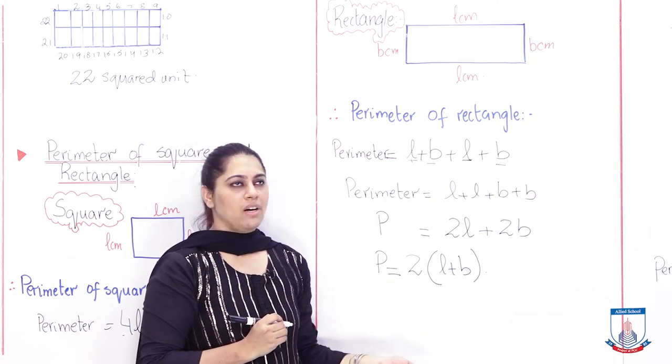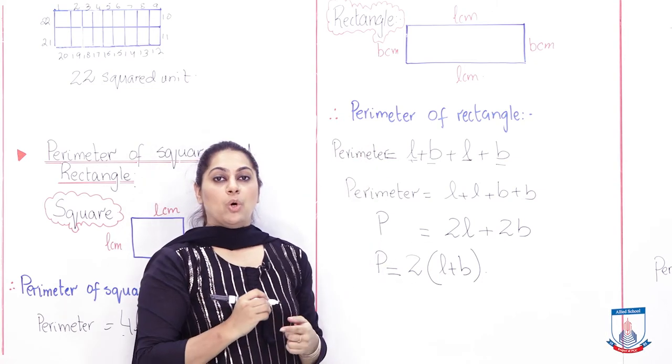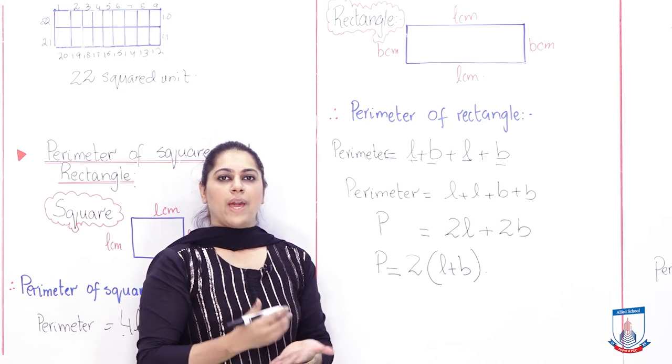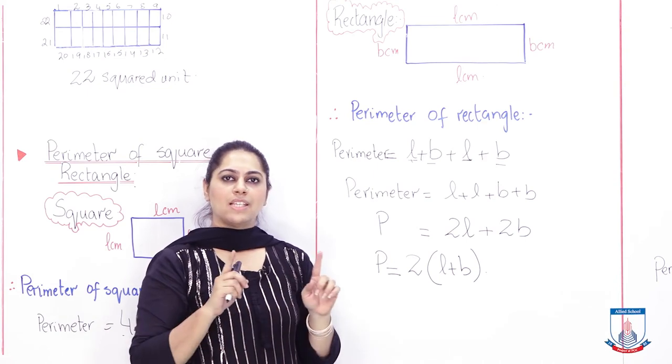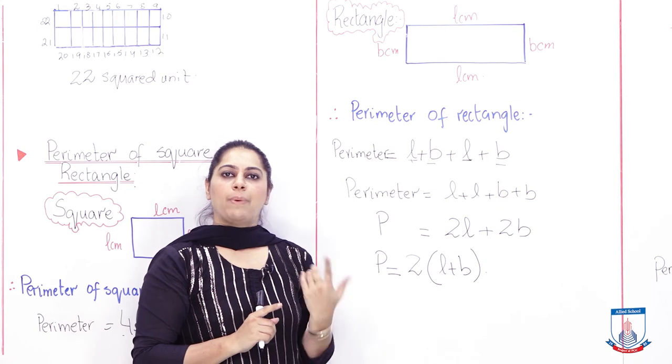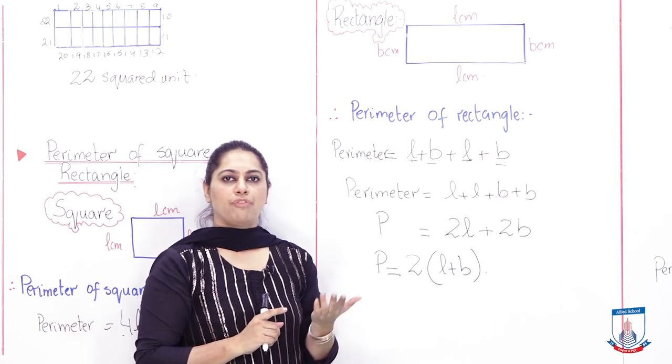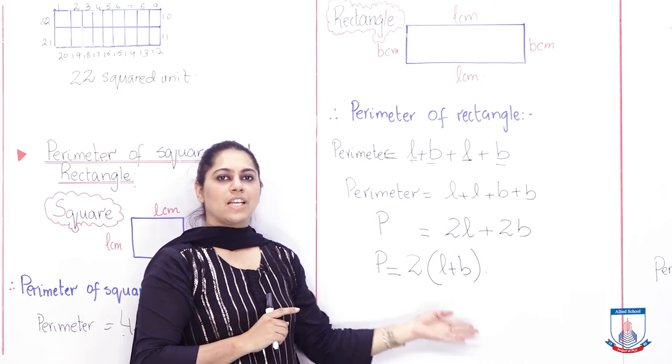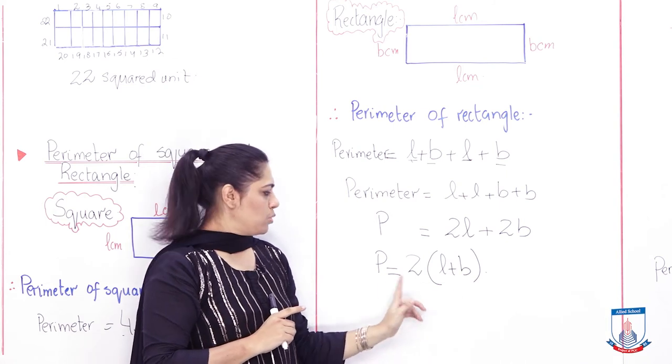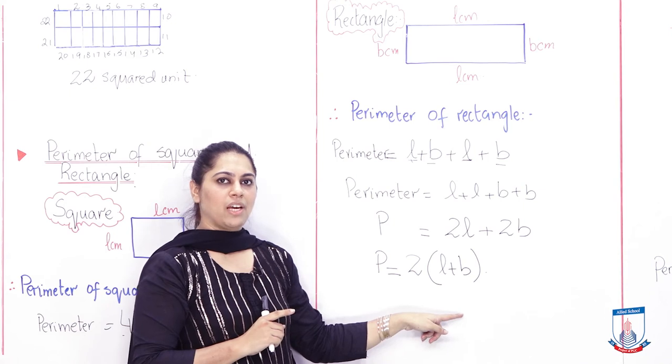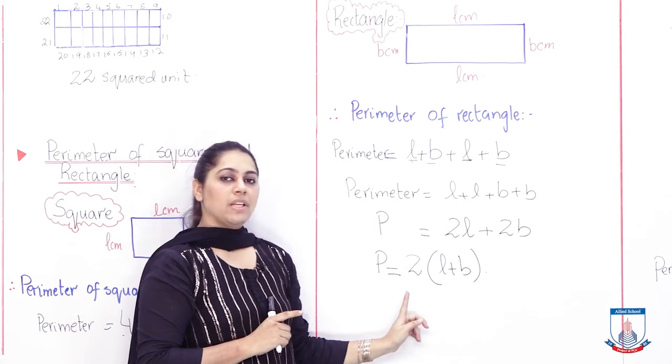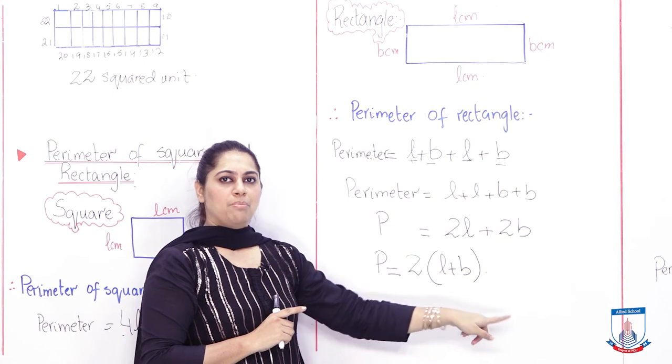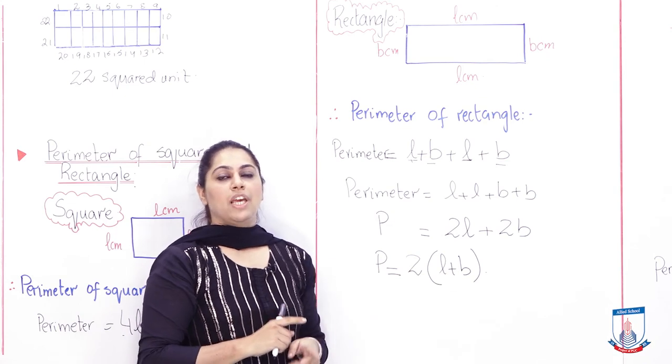Then I will add P again, equal to. Since 2 is appearing twice, I can take 2 as common and write it once. How? I took 2 as common, I put brackets, and L plus B came. So dear children, this became our formula to find out perimeter, and that too of which shape? Rectangle. I hope you remember square's property, that all sides are equal, so perimeter of square is 4L. Since in rectangle opposite sides are equal, the formula we derived is 2 bracket L plus breadth.